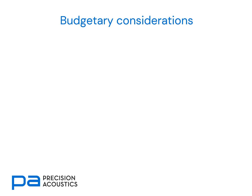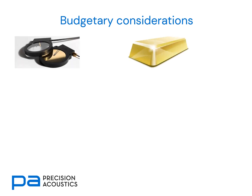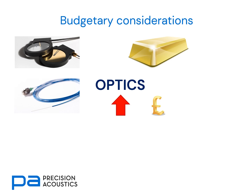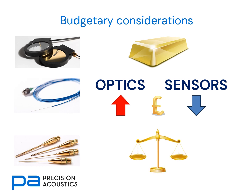It's important to consider budgetary considerations as well. A membrane hydrophone is a gold standard measuring device and is often reflected in its price point. Fibre optic sensors themselves are very cheap compared to other hydrophone types, but the optics needed to drive them can be somewhat more expensive, so one has to balance the consumption of sensors against the cost of the optics. Quite often, needle hydrophones provide the best balance between capability and cost.